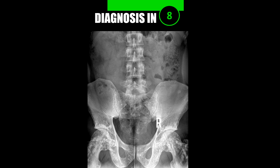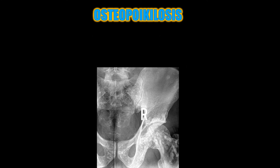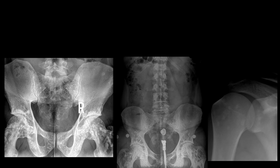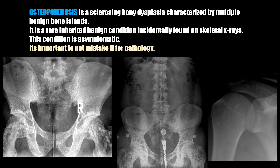Case number nine: osteopoikilosis is a sclerosing bony dysplasia characterized by multiple benign bone islands. It is a rare inherited benign condition incidentally found on skeletal X-rays. This condition is asymptomatic and it's important not to mistake it for pathology.